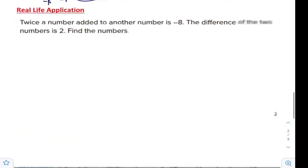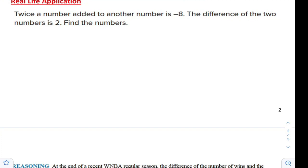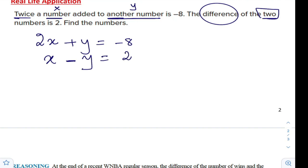Moving to real-life application, we will translate the statements or the verbal expressions and translate it into math, then solve it. So twice a number, add it to another number. We have first number, we will call it x. The other number, we will call it y. So twice a number, so twice x is 2x, plus another number which is y, is means equal, negative 8. The difference of the two numbers, so the first number and the second number is 2. We have two equations.